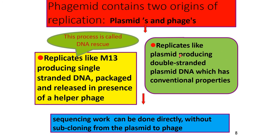Whereas it also replicates like a phasmid, producing double stranded plasmid DNA with conventional properties. This phasmid can be used in sequencing work, which can be done directly without subcloning from the phasmid to phage.